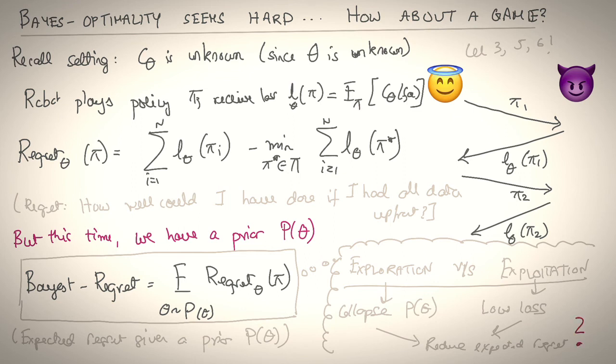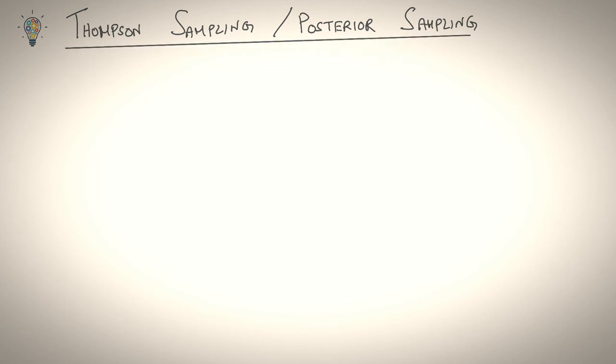Notice how the familiar trade-off between exploration and exploitation arises here. So we need to explore to collapse P(theta) and we need to exploit to keep losses low. And minimizing expected regret implicitly gives us this trade-off. The question remains, what sort of algorithms reduce expected regret? So we'll talk about an old, but extremely simple and effective algorithm called Thompson sampling that has in the last decade enjoyed a resurrection of sorts. Thanks to some wonderful work done by Daniel Russo, Ian Osband and Benjamin Van Roy. I highly recommend checking out this tutorial to know more.